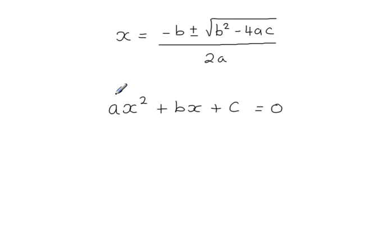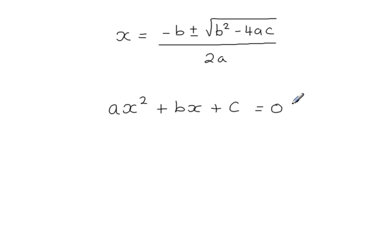So you have this quadratic equation, you're trying to solve it, and the coefficient of x squared is a, the coefficient of x — the linear term — is b, and then you've got the constant c. So these values a, b, and c appear in the formula, and you can work out your solutions to this equation. What we're going to look at is where this formula comes from, starting with this general quadratic equation.